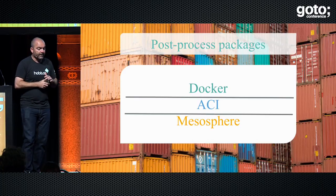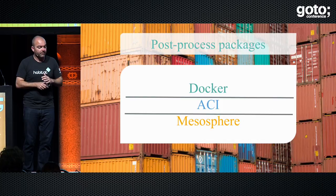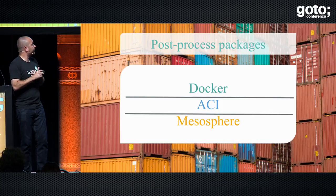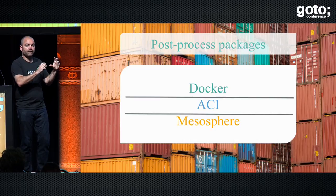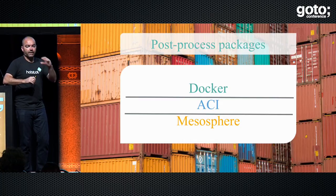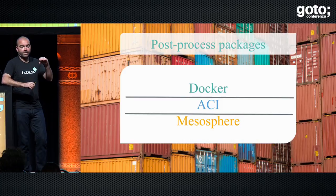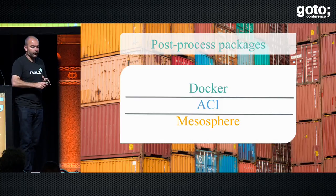Habitat allows you to post-process packages. Once you've packaged up your application, you can export it in a few different formats — Docker, ACI, Mesos package, or a tarball — and it does that dependency resolution: your application, language runtime, other dependencies, the Habitat supervisor, and a small lightweight user land.